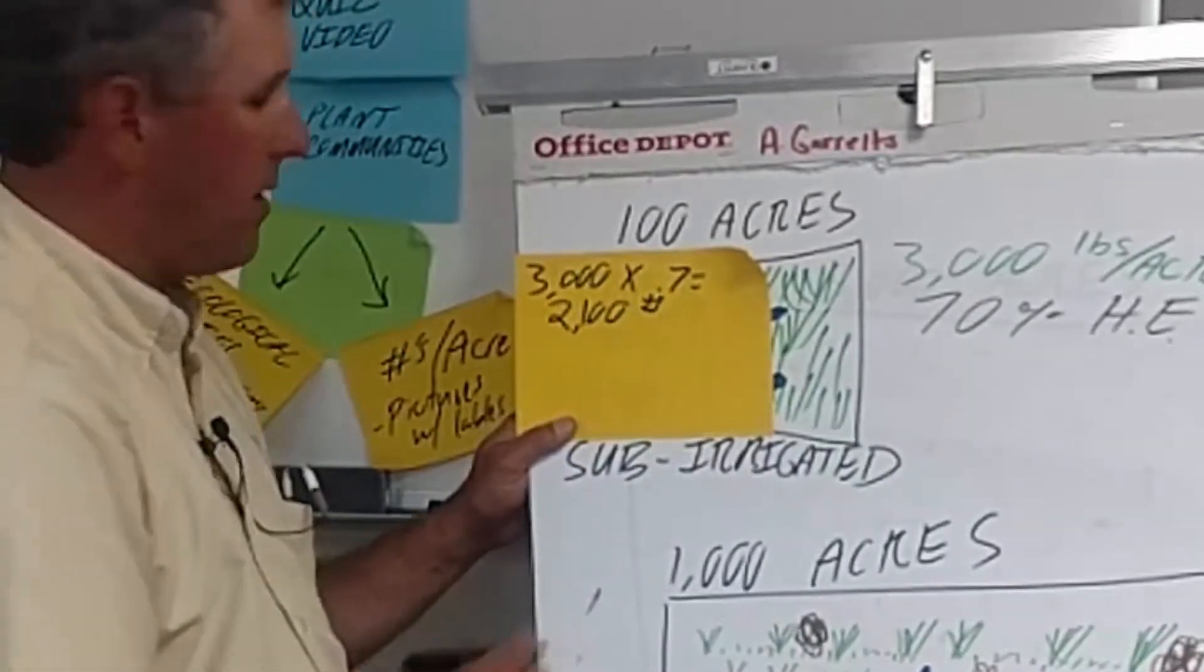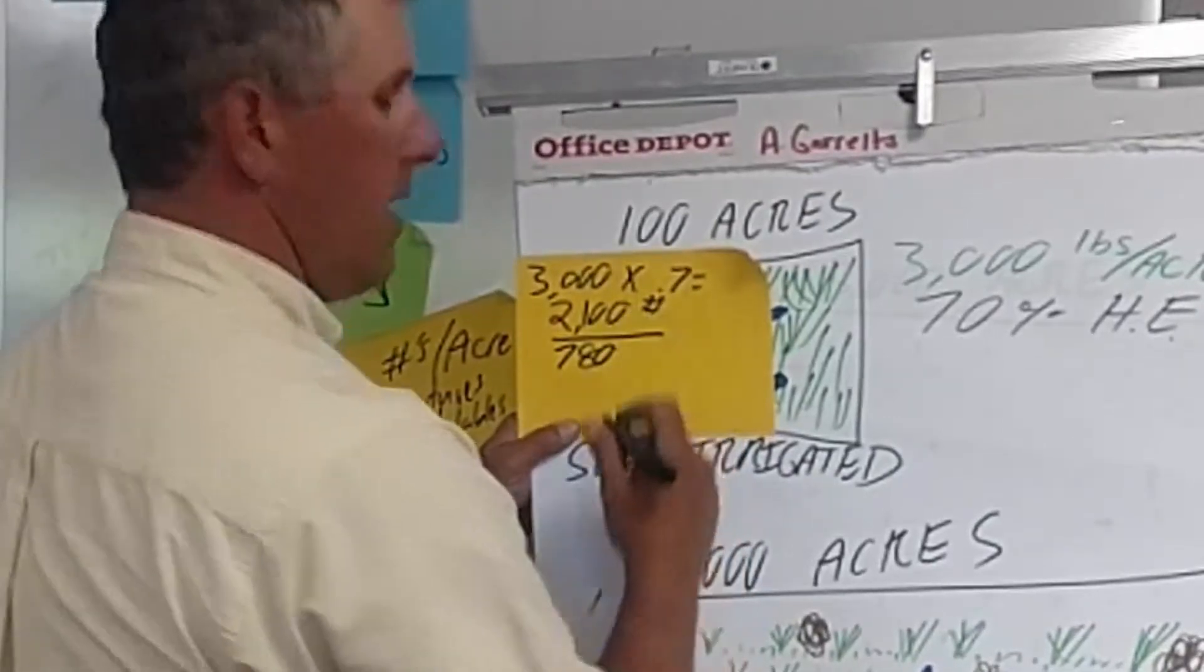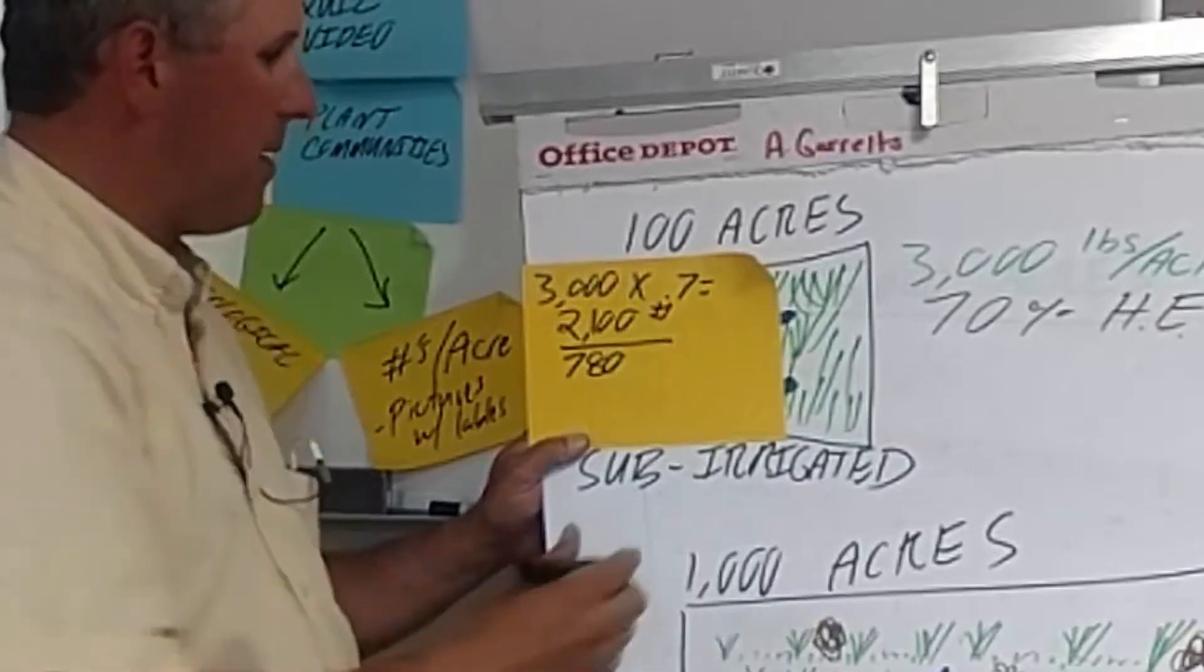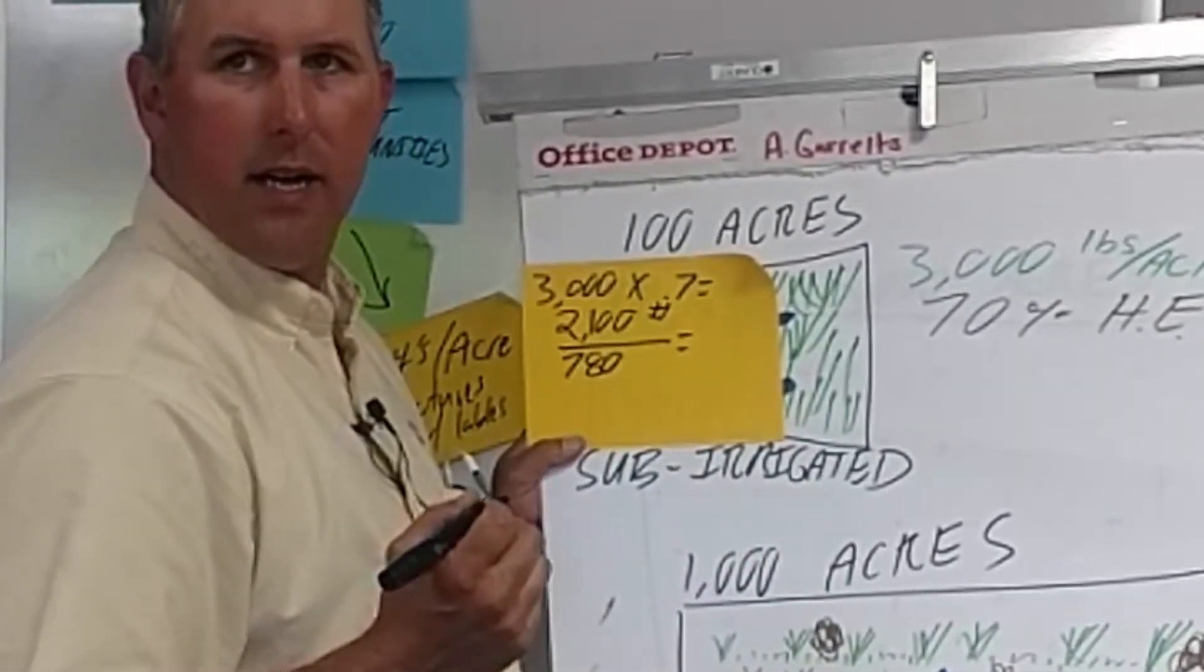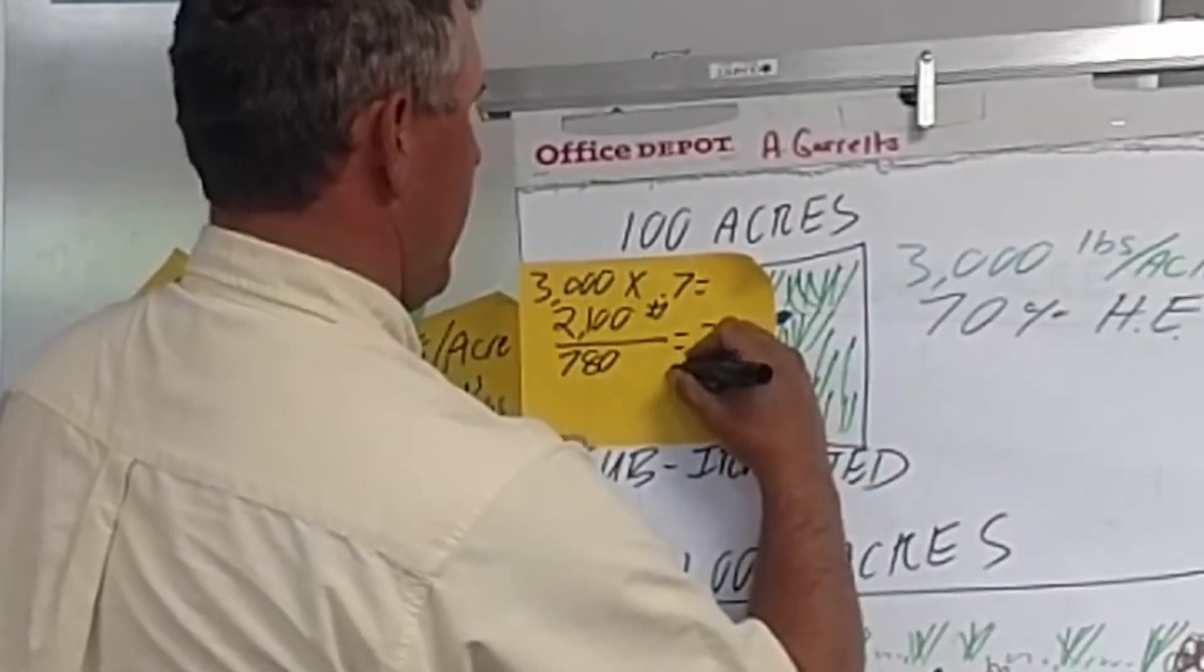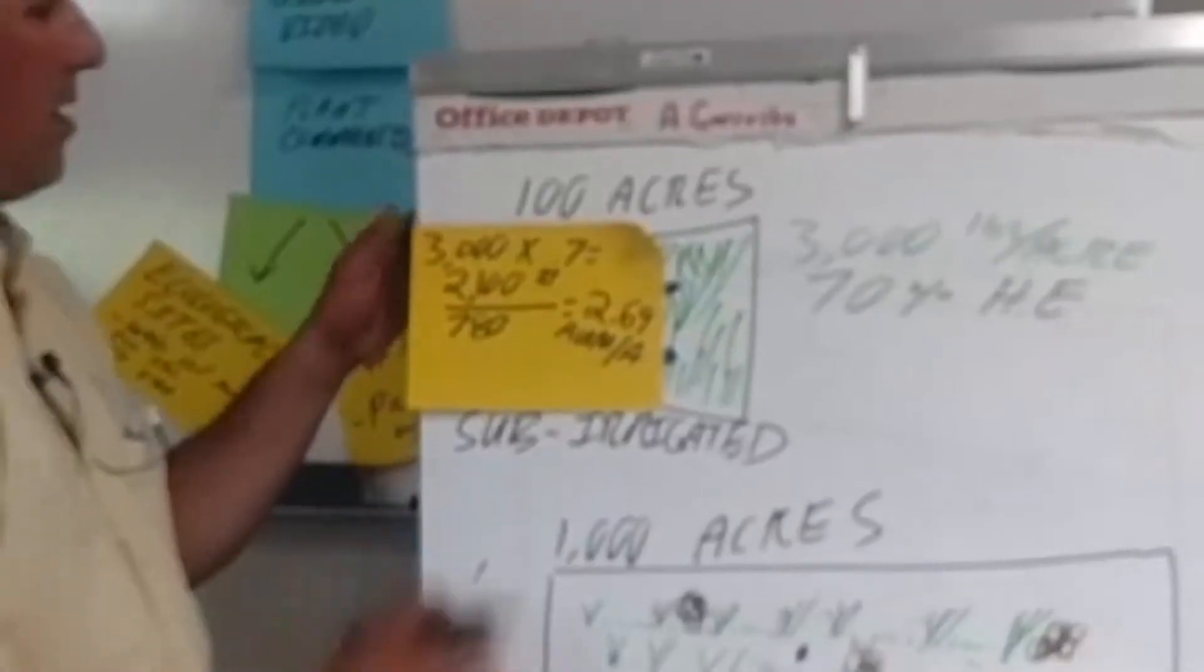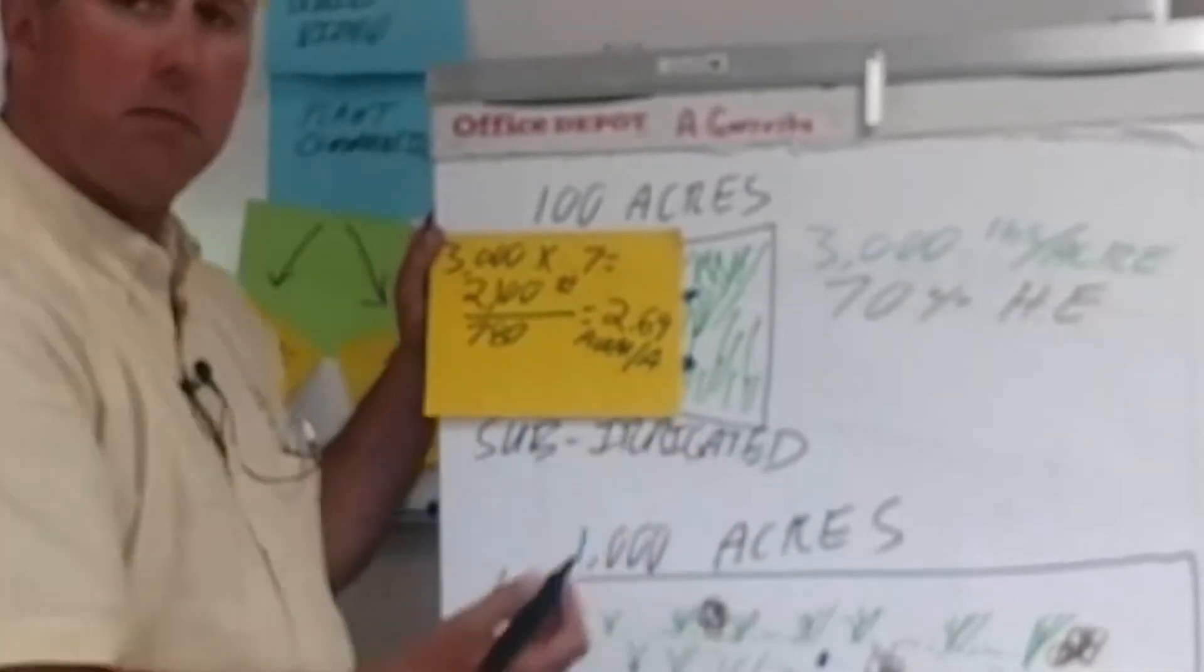We take our 2,100 pounds divided by the 780, that's the number of pounds of air-dried forage in one AUM, and that gives us 2.69 AUMs per acre.